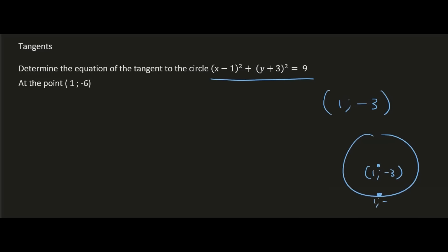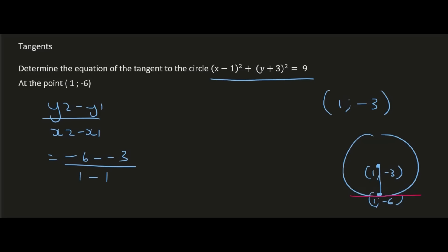The tangent is at the point (1, -6), somewhere below the center, and we know there's going to be a tangent at that point. We work out the gradient from the center to the point where the tangent touches using (y₂ - y₁) / (x₂ - x₁): (-6 - (-3)) / (1 - 1). That gives us 0 at the bottom, which is undefined — meaning the radius is completely vertical.